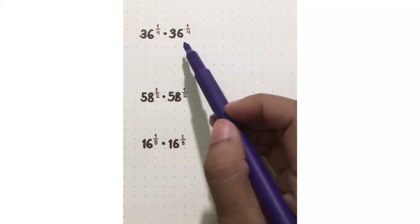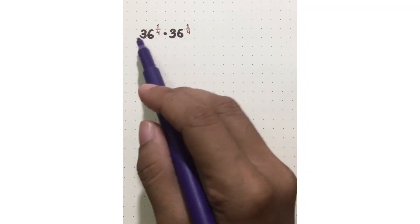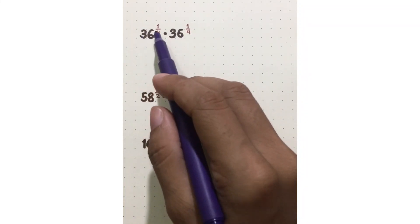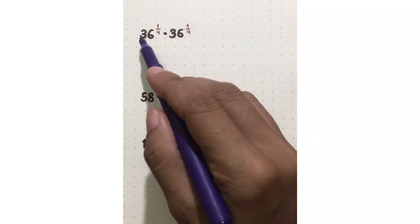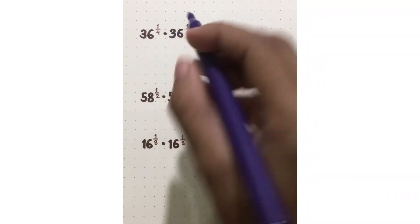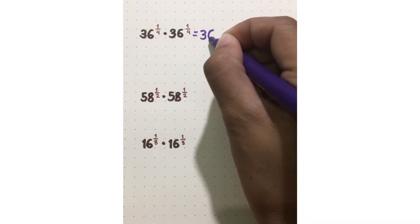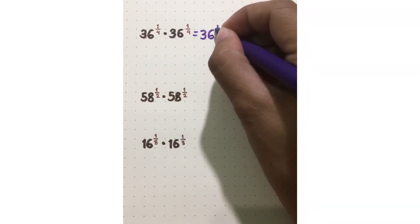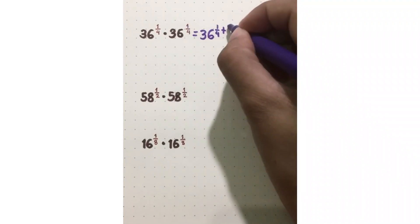In multiplying numbers with rational exponents, you have to look at the base first. If they have the same bases, like 36 raised to 1 fourth times 36 raised to 1 fourth, they have the same bases. So you may just copy 36, then add their exponents — 1 fourth plus another 1 fourth.